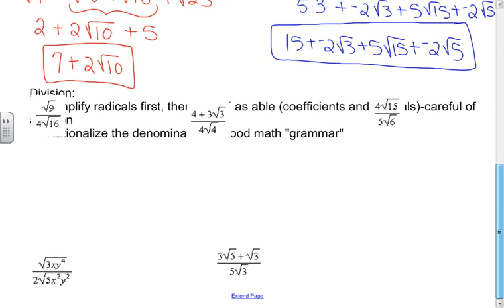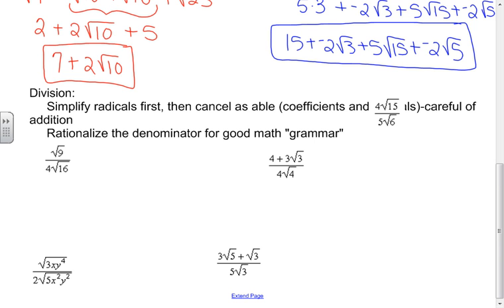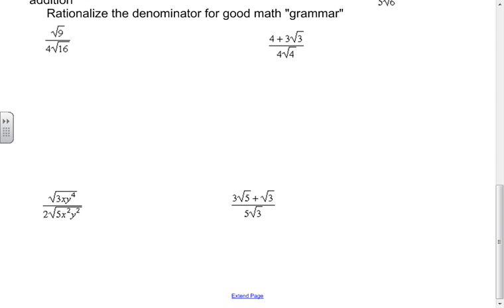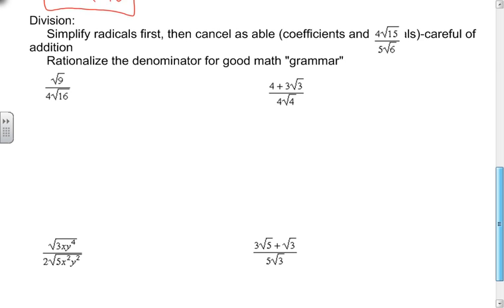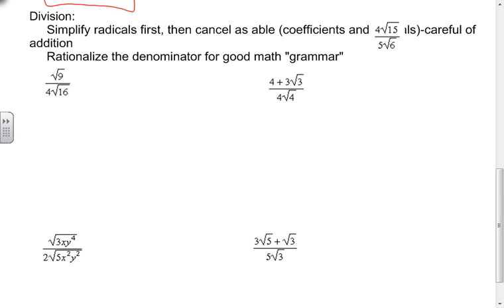Division works essentially the same, with one little tweak — and that's a good math grammar thing. We always simplify our radicals first, then cancel as able: coefficients cancel with coefficients and radicals cancel with radicals, as long as everything is multiplication. Then we rationalize the denominator — that's our new step.